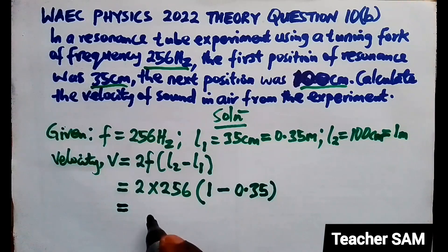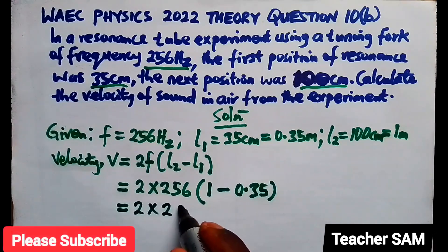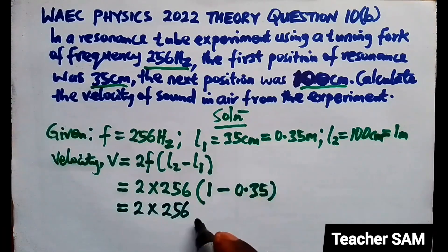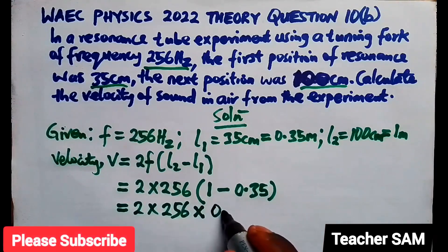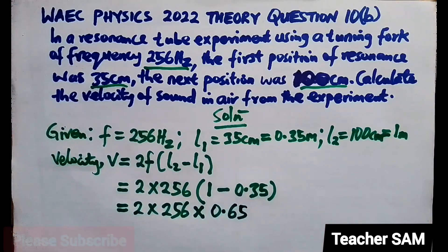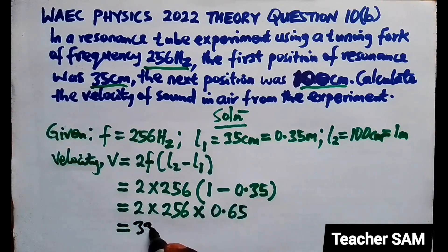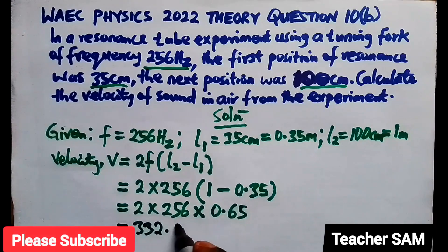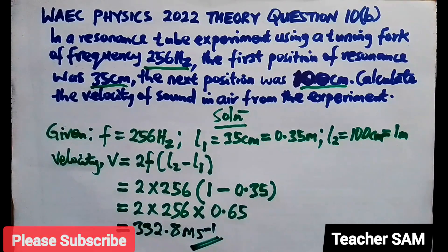Let's go ahead with this. Clearing the bracket: 1 minus 0.35 gives us 0.65. So when you multiply all that — 2 times 256 times 0.65 — you are left with 332.8. Since it's velocity, the unit is meters per second. So that is the answer to this equation.